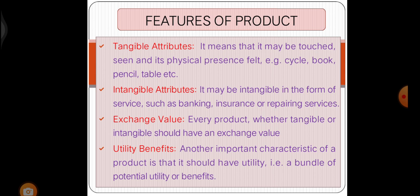Now we are going to see features of product. The first one is tangible attributes — the product may be touched, seen, and its physical presence felt. Examples include cycle, book, pencil, table and so on. Next, intangible attributes — it may be intangible in the form of service such as banking, insurance, or repairing services.